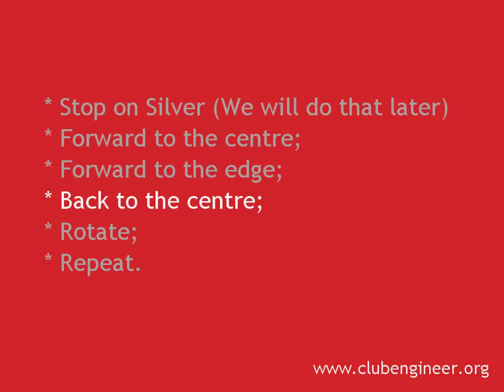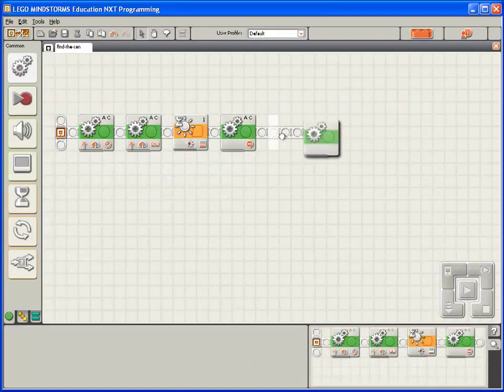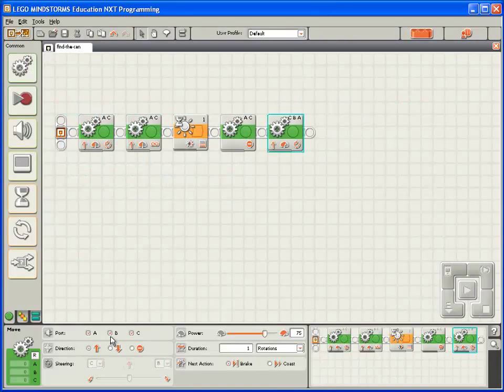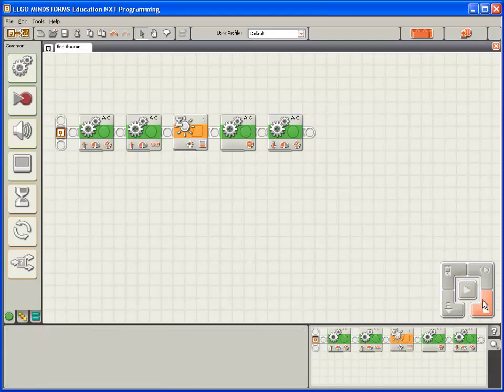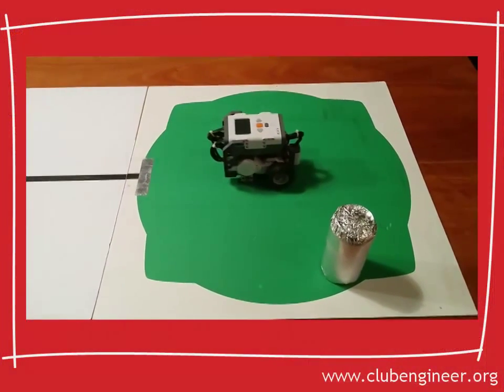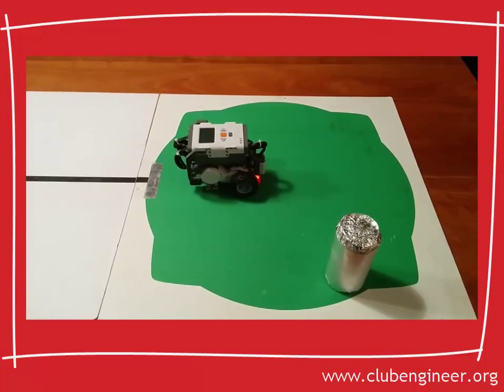Now the robot's on the edge of the spill zone. We need to bring it back to the center. So we'll do that with another move block. Once again, ports A and C. We want the robot to move backwards. We found that 1.8 rotations was about right moving forward. So let's try 1.8 moving back. Compile, download and run.